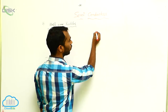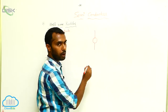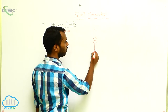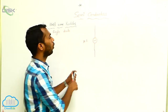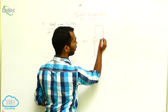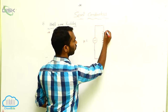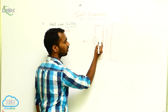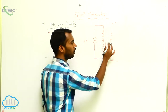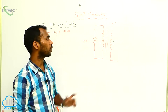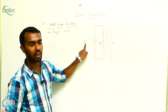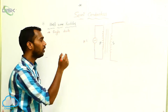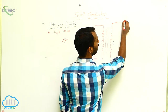Here I am drawing the circuit diagram. It is an AC power supply — it gives AC current. This AC power supply is connected to a transformer. This is the first coil of the transformer, called the primary coil. This one is called the secondary coil of the transformer. In this secondary coil, I have to use a single diode. This is the diode symbol, and here I am using a single diode.